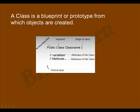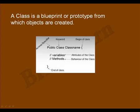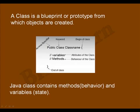The first part indicates access specifiers, which is public, and class is a keyword. Class name is the name which we are going to provide. Curly open brace indicates begin of class and curly closing brace indicates end of class. In between a class you can provide variables which define state and methods which define behavior. So a Java class contains methods and variables.